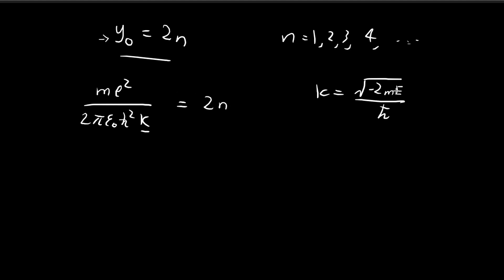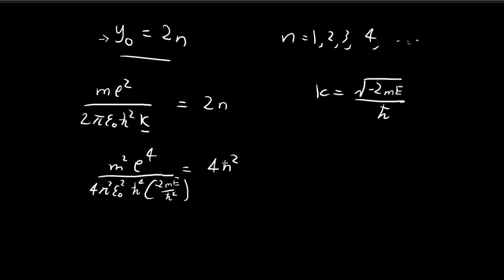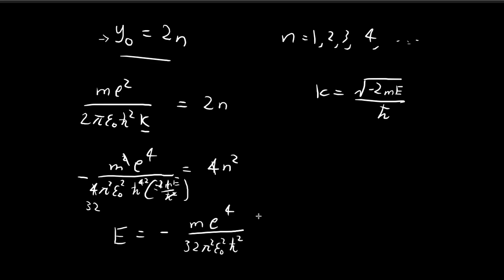Squaring both sides allows us to find the allowed energy levels. We get m²e⁴ / (4π² ε² h̄⁴) times k² = 4n², where k² corresponds to −2mE / h̄². Moving terms and canceling, we get the allowed energy levels: Eₙ = −me⁴ / (32π² ε² h̄²) × (1/n²).